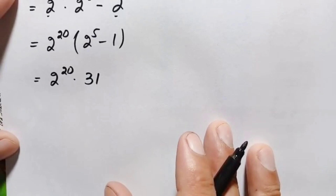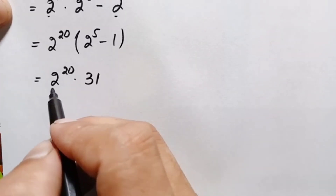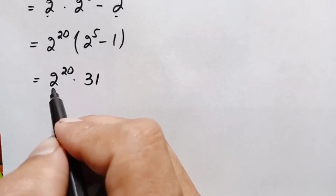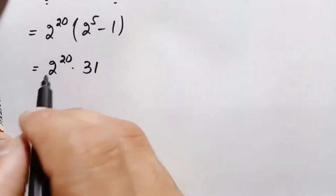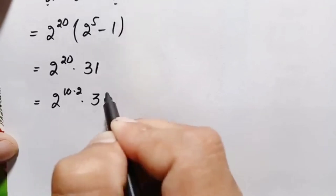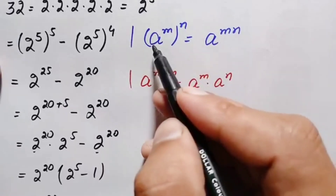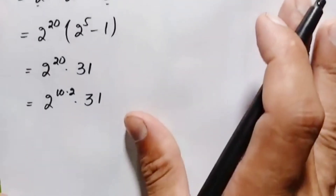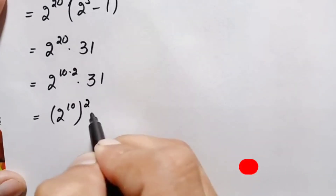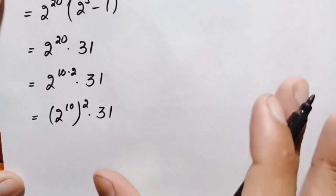Now we need to find the value of 2 raised to power 20 without a calculator. We rewrite 20 as 10 times 2, so 2 raised to power 20 equals 2 raised to power 10, whole raised to power 2. We will find the value of 2 raised to power 10 first and then use an algebraic identity to square it.